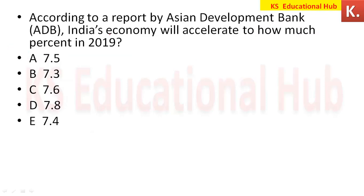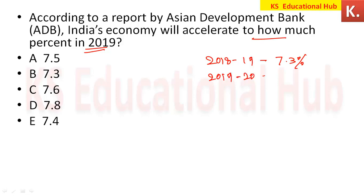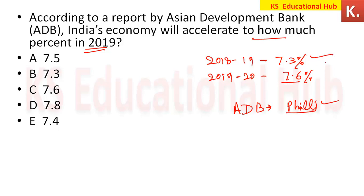According to the Asian Development Bank (ADB), India's economy will accelerate to 7.3% in 2018-19, and in 2019-20 India's growth will be 7.6%. The headquarters of ADB is in the Philippines.